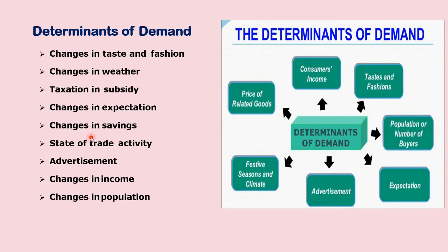The fifth determinant is changes in savings. Savings and demand have an inverse relationship — they are inversely related. When a person starts saving, that means he is spending less, which means his demand is decreasing. So if your saving increases, your demand decreases. For example, if I earn 10,000 rupees and save 9,000, my consumption is only 1,000 rupees. But if I save only 1,000 rupees, my expenditure is 9,000, meaning I am demanding more.